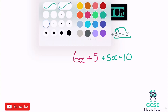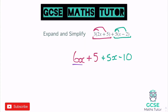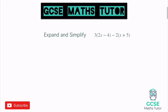Now simplify by tidying up. We have 6x and 5x: 6 plus 5 is 11, so 11x. Then positive 15 and negative 10: 15 take away 10 is positive 5. Wait — we have positive 5 and negative 10, and 5 take away 10 is negative 5. So the final answer is 11x minus 5.